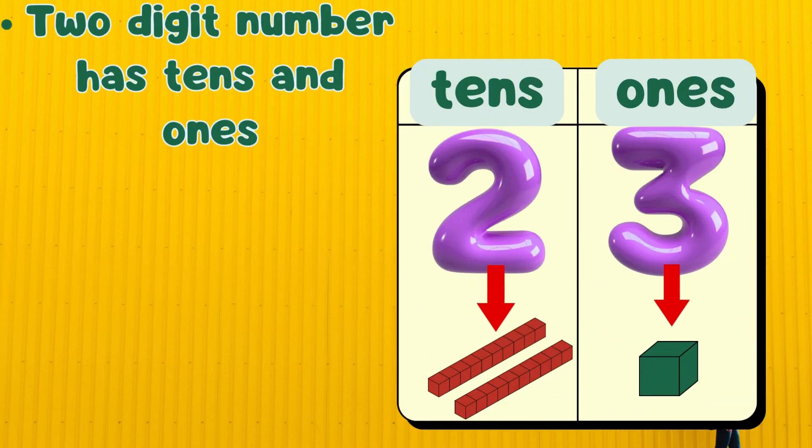Look at the number 23. The number 3 belongs to the 1s, and the number 2 is in the 10s place. So, 23 has 3 1s and 2 10s. This chart is called a base 10 chart.